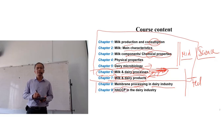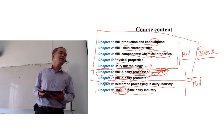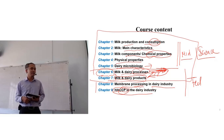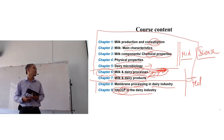The last chapter, Chapter 9, discusses the principles of HACCP applied in the dairy industry. HACCP stands for Hazard Analysis of Critical Control Points. Since you have already studied this in general, Chapter 9 will just cover the important points of HACCP specific to the dairy industry.